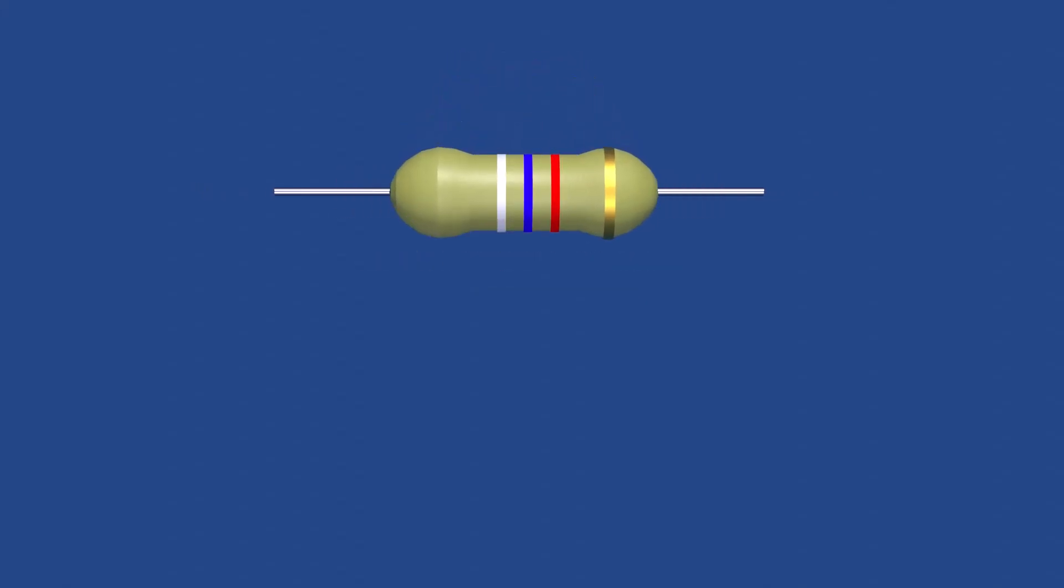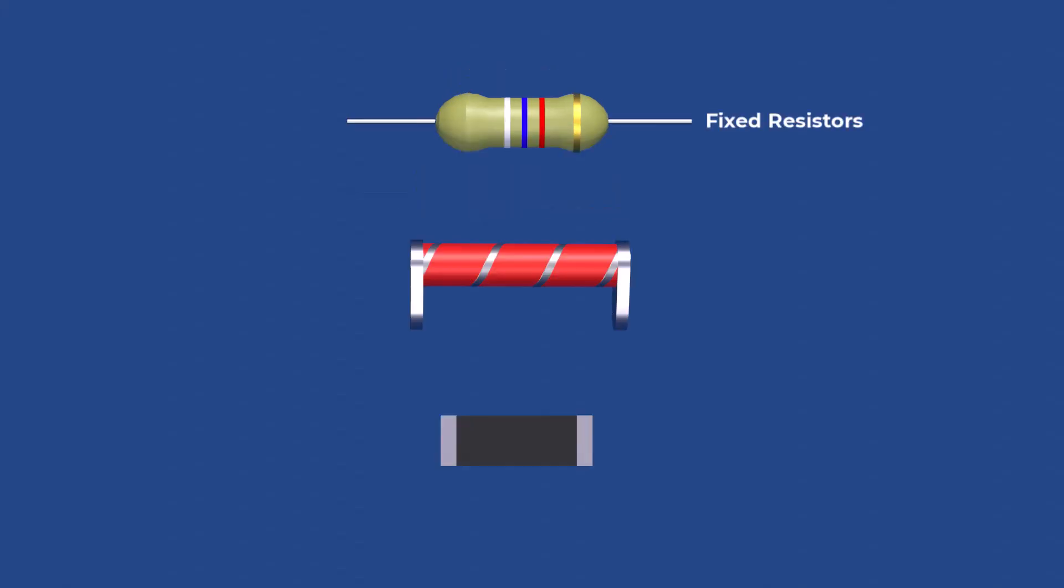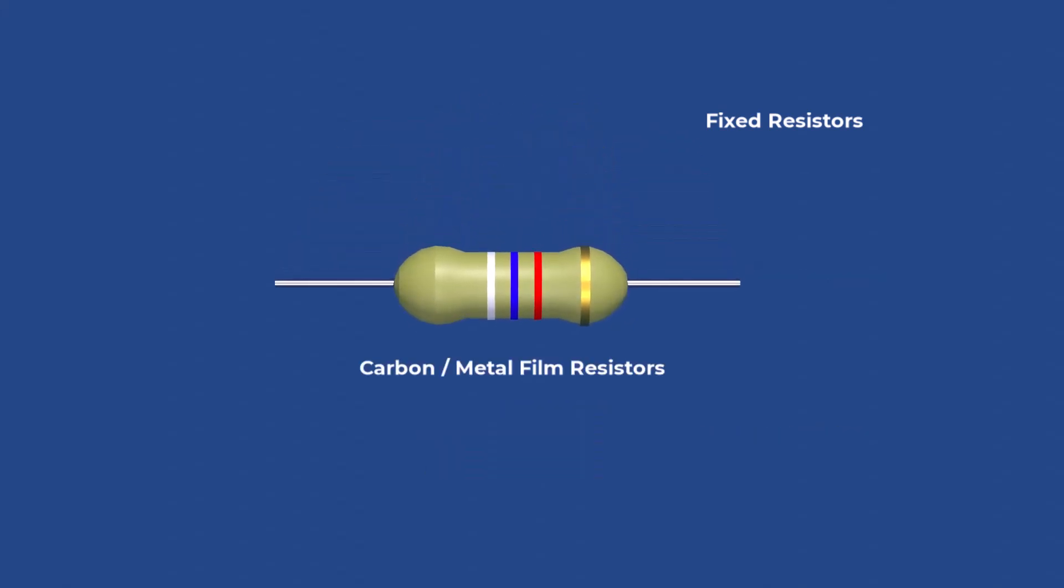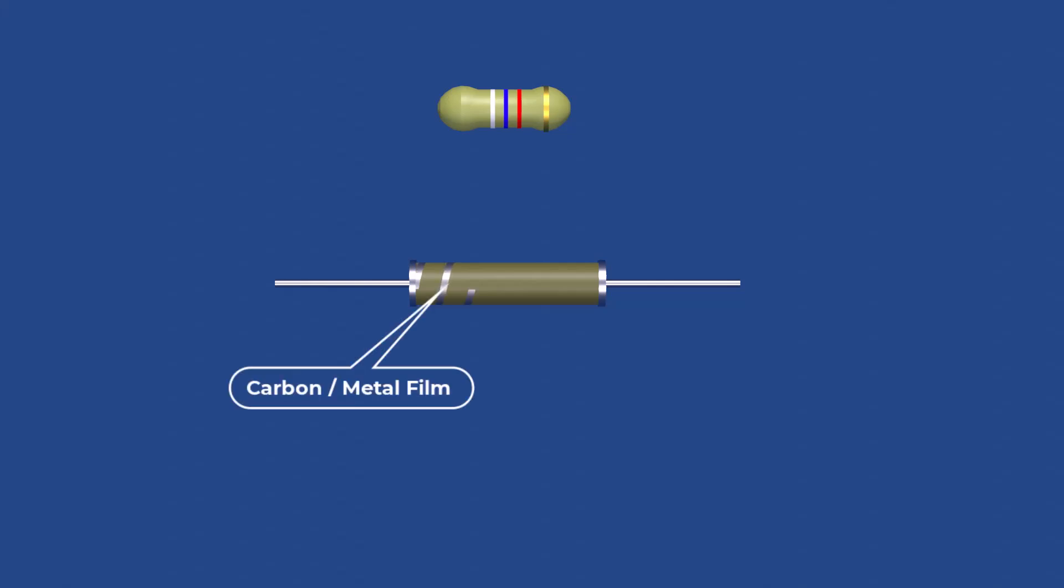Resistors are classified based on their construction, material type, and resistance value. The most common types include fixed resistors, variable resistors, and special resistors. Carbon film resistors and metal film resistors are types of fixed resistors that offer precise resistance values and excellent temperature stability. These resistors are made by depositing a thin layer of carbon or metal onto a ceramic substrate.